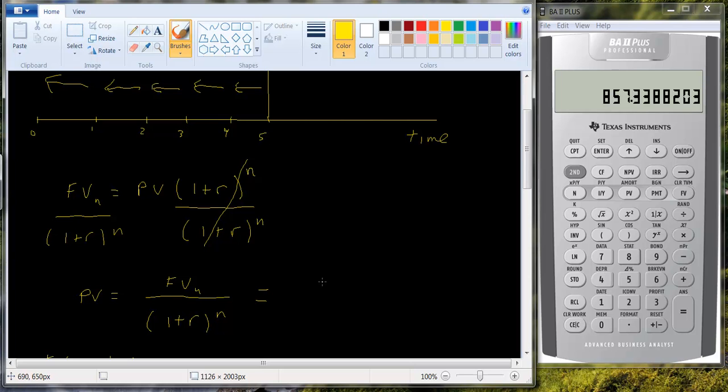Let me see if I get the same number. So suppose I took the thousand and I brought it back two periods. I should get this same number eight fifty seven thirty three or eight fifty seven thirty four. Let's divide that by one point zero eight squared. So let's bring that back two periods. Let's see what we get.